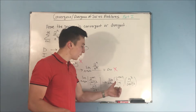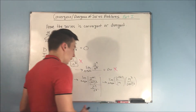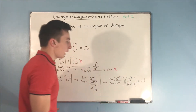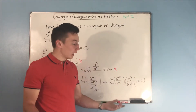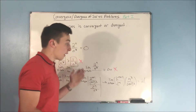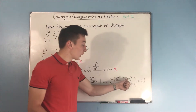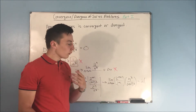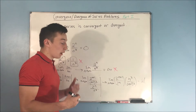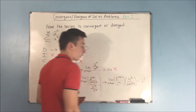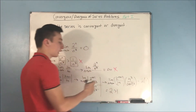Looking at 2 to the n+1 over 2 to the n — subtracting exponents gives us 2. Then for n cubed over (n+1) cubed: when you expand and divide by n cubed, all the lower-order terms go away and the coefficients on n cubed are both 1, so that limit equals 1. That gives us 2 times 1, which is 2. Since 2 is greater than 1, this diverges by the ratio test.